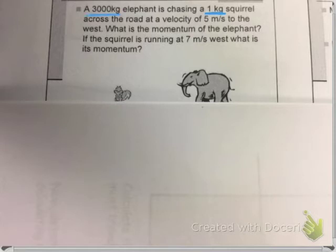And we also know that the elephant has a mass of 3,000 kilograms. So we'll go ahead and write this out here. Mass of the elephant equals 3,000. And the mass of the squirrel equals 1.